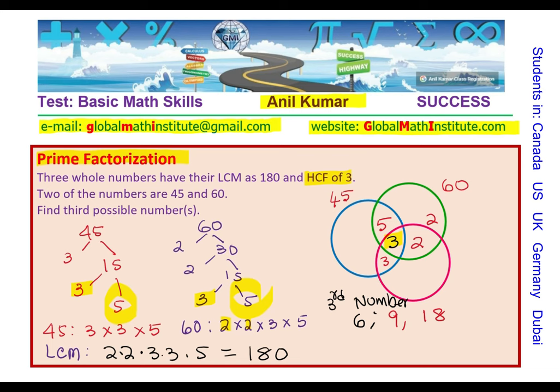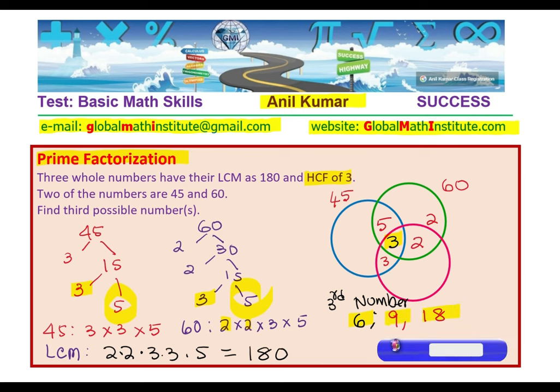So these three numbers could be possible solutions. So now you know that the two numbers are 45 and 60. For this condition, the third number can be 6, 9, or 18. We are assuming that these numbers are greater than 1. Perfect. So I hope you have understood the concept.